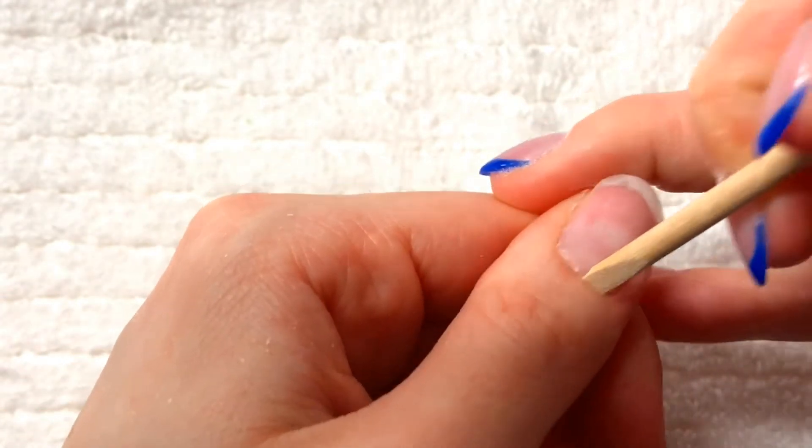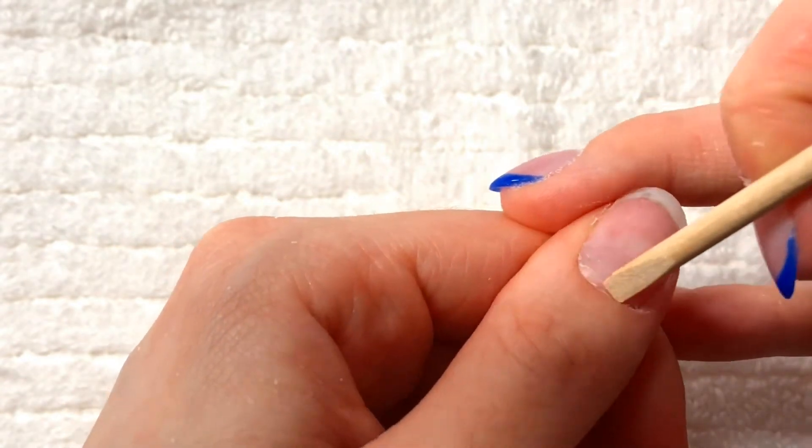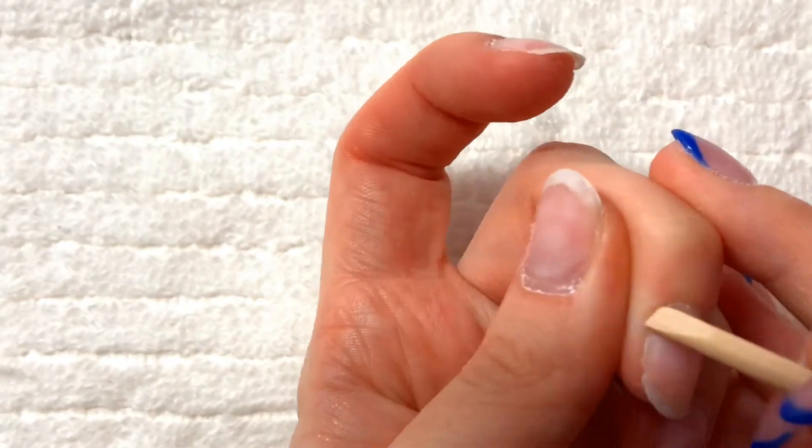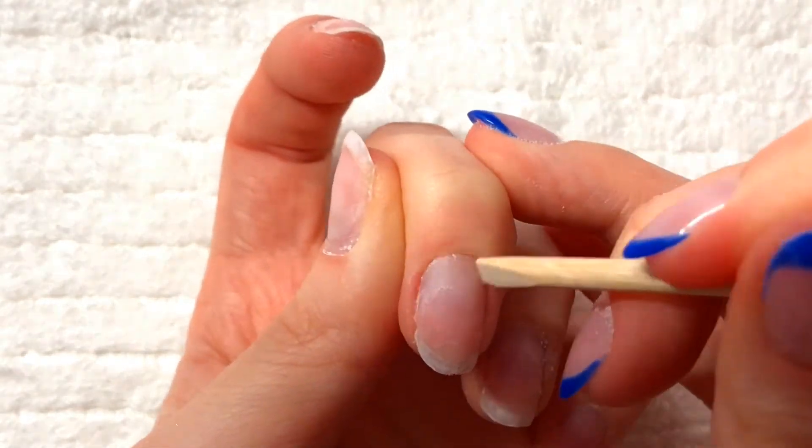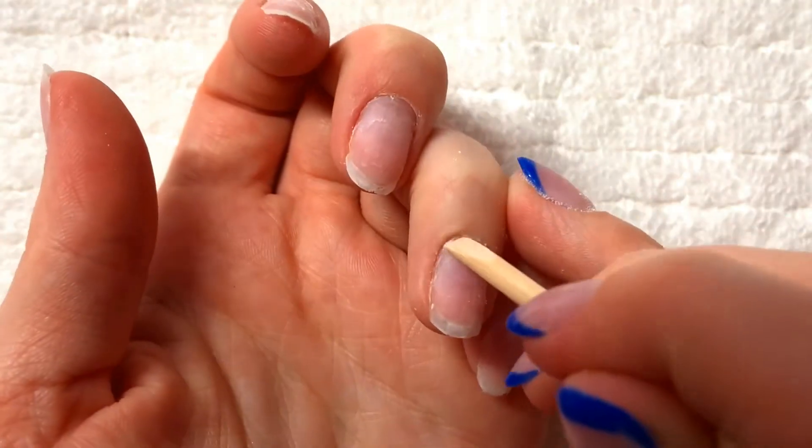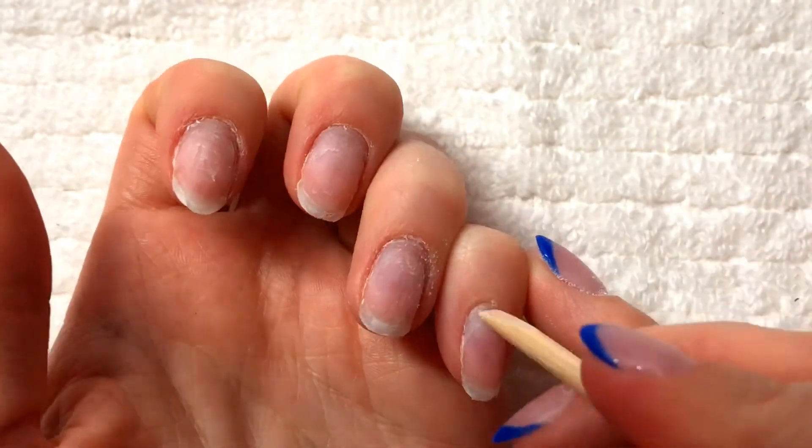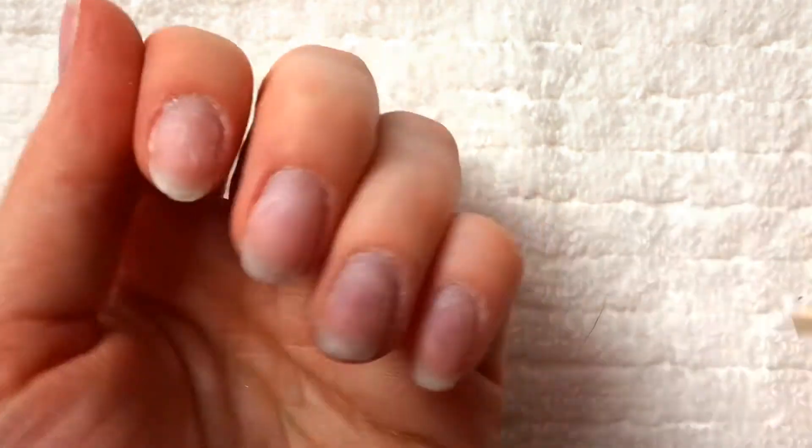So the first step when it comes to applying dip powder to your natural nails is to prep your nails. Now I'm starting off by pushing my cuticles back. If you want you can go ahead and do some cuticle work. I normally don't just because my cuticles are pretty good so I don't really need to do that.